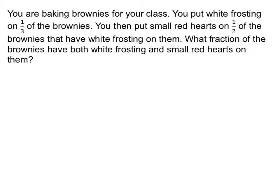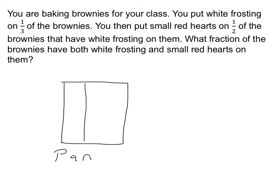What fraction of the brownies have both white frosting and small red hearts on them? Let's draw a picture. We start off with a pan of brownies. It says you put white frosting on a third of them, so let's divide our pan up into three equal pieces and put white frosting on one of those pieces.